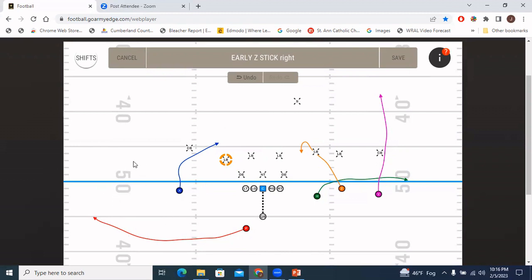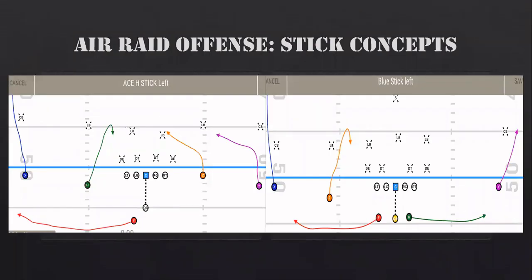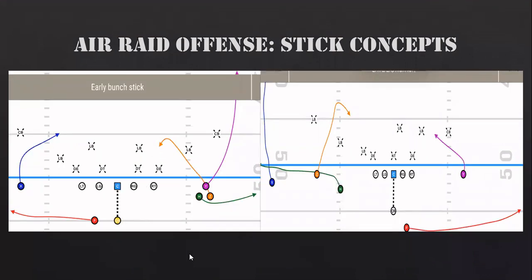Here are examples of the stick route in different formations used in my offense. The ace formation is our two-by-two set. Here's an example of our two-back set stick — this would be 'Blue Stick Left.' A couple of three-by-one set examples are shown as well. The rules stay the same: the most inside receiver runs the flat, the middle slot runs the stick, the outside receiver runs the outside release vertical, and the running back swings opposite the trips.